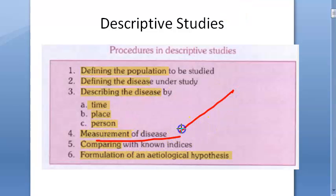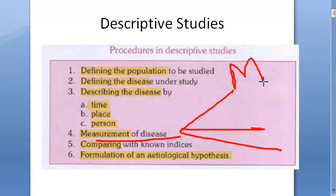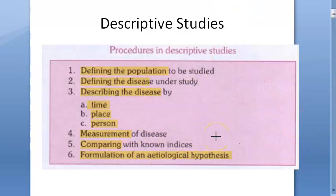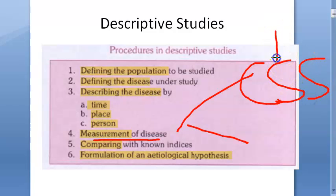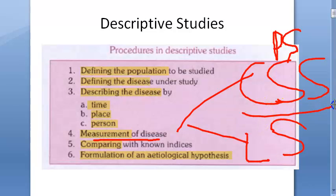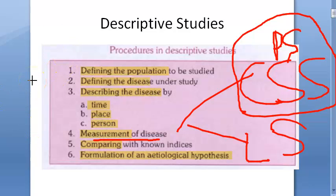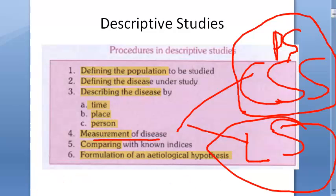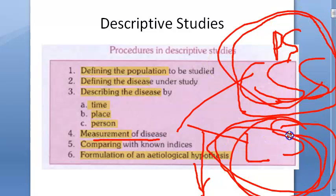Now coming to measurement of disease: what is the morbidity rate, the mortality rate, the incidence, and the prevalence of the disease? You can compare it with other places, people, and time. There are two types of studies here: cross-sectional study, also called prevalence study, where you study at a point in time — this is the simplest form of observational study. Then there is longitudinal study, where observations are repeated on the same population over a prolonged period of time with emphasis on follow-up.